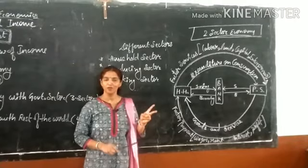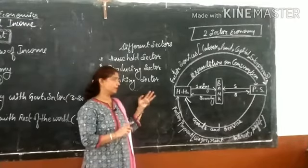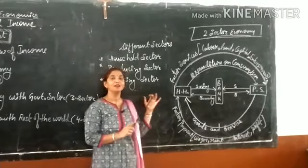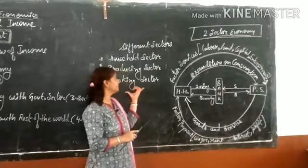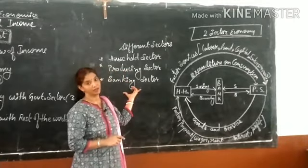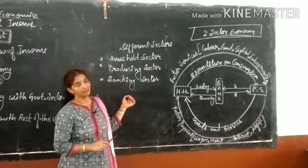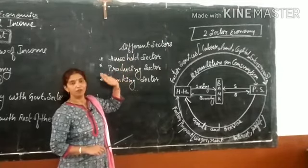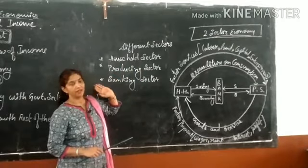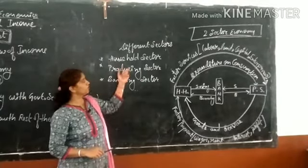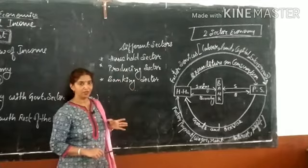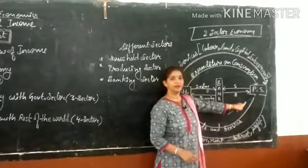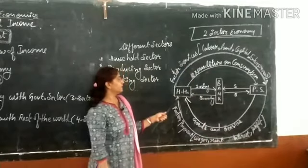Other than these two sectors, the banking sector will also remain in any type of economy — whether two sector economy, closed economy, or open economy — as it is working as the financial market. So banking sector, household sector, and producing sector, these three sectors will always remain in any kind of economy.